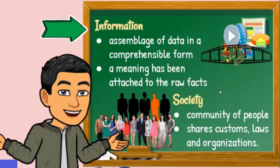Let us define first the two words individually. When we say information, it is an assemblage of data in a comprehensible form capable of communication and use. The essence of it is that the meaning has been attached to the raw facts.